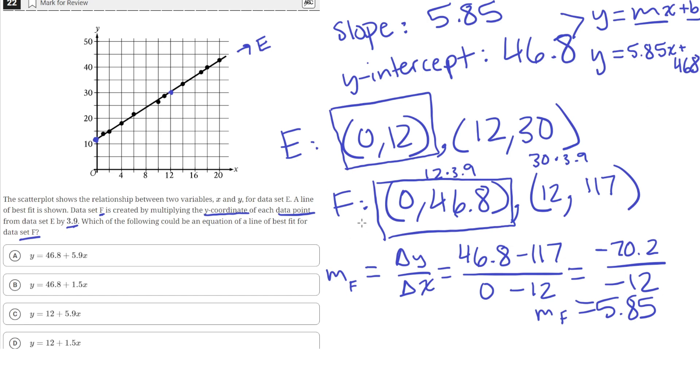So, now we can look at the answer choices. And A seems very close to our answer. The Y intercept is the same, but the slope here is 5.9, which is very close to 5.85. The rest of the answer choices are very far off. Here, the Y intercept is the same, but the slope is only 1.5. Here, it says the Y intercept is 12, which is incorrect. That would be the Y intercept of line E. And the same for D. It says the Y intercept is 12 as well. So, D is also incorrect. So, A is the correct answer.